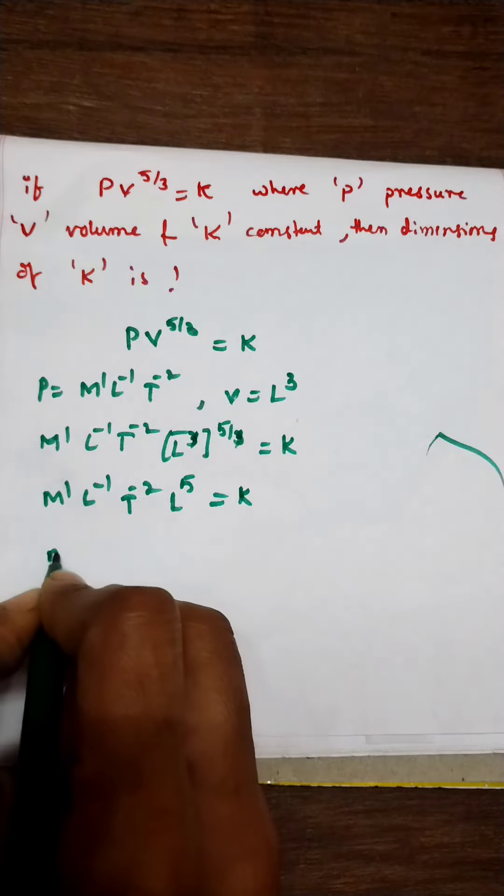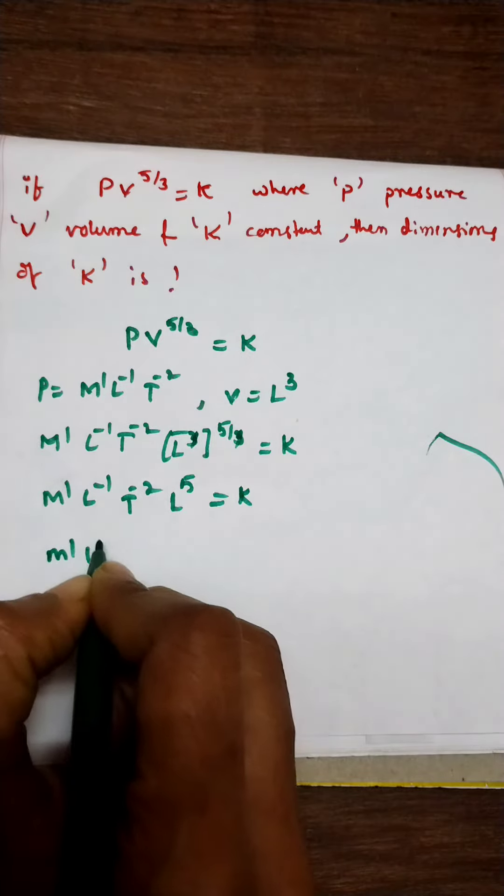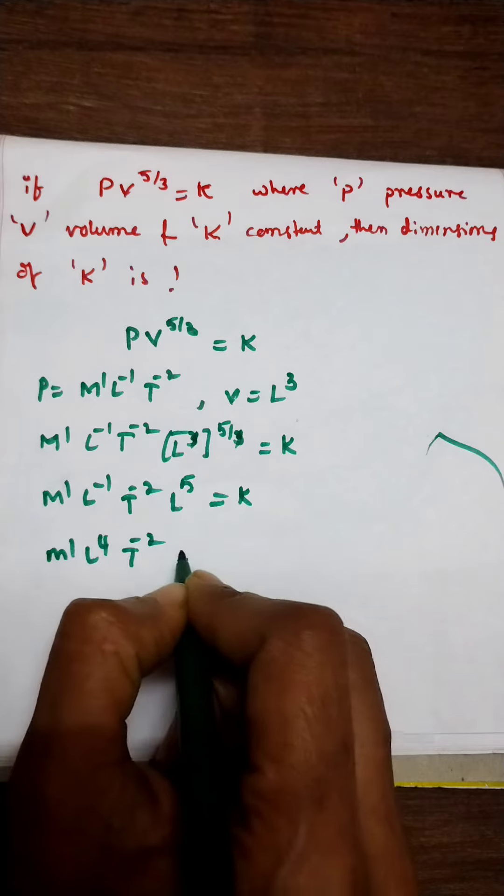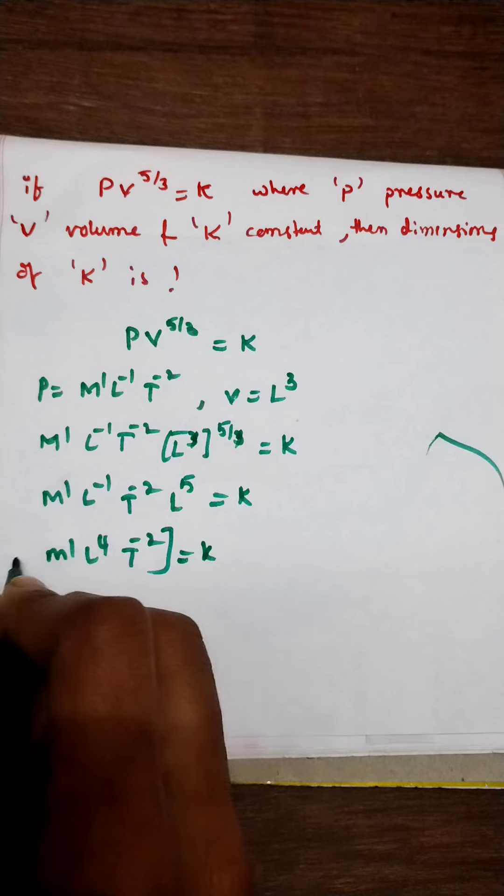Then M power 1, L power 4, T power minus 2 equals K. So this is the dimension of K.